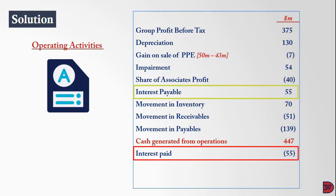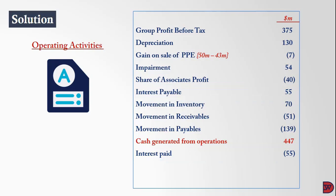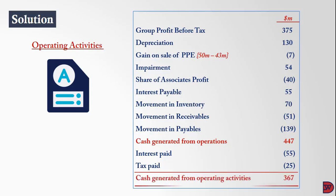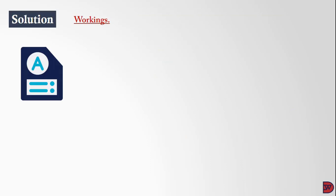Interest paid is 55 million dollars, equal to the interest payable, meaning the interest recorded was fully paid. Tax paid is 25 million dollars, which we subtract. Since we start with profit before tax, we treat the tax payable like we did for interest. This leads to the final cash generated from operating activities of 367 million dollars.